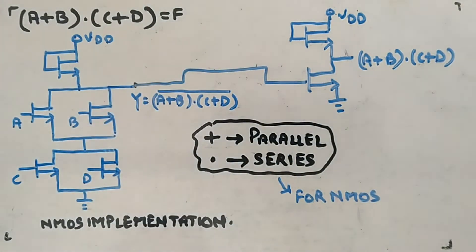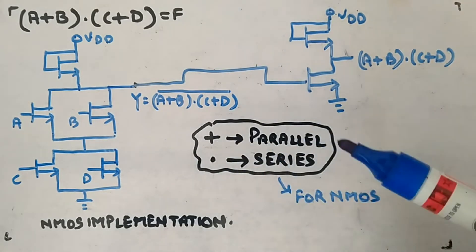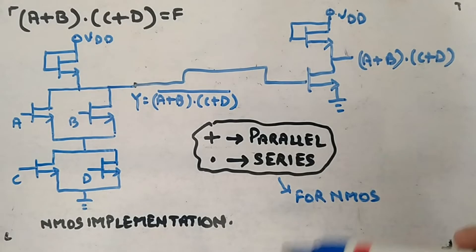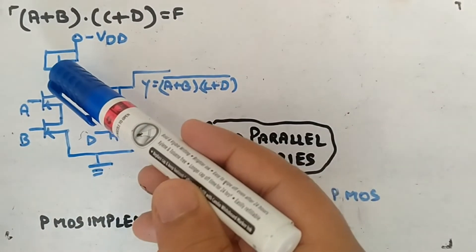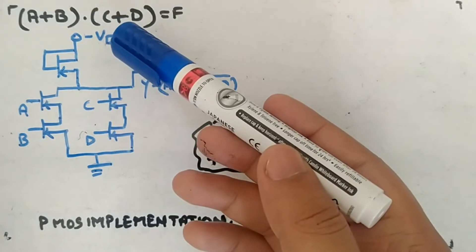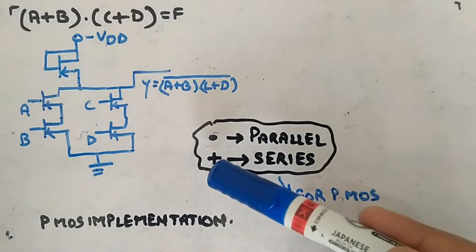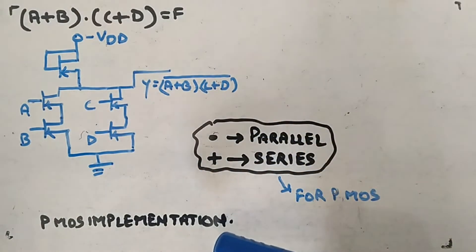Now the same thing in PMOS — how you will implement. We will follow: plus means series and dot means parallel for PMOS. So this is the NMOS implementation; now let me show you the PMOS implementation of the same function. The active load is as it is. Here you have minus VDD and ground. For PMOS, dot is treated as parallel and plus is treated as series.